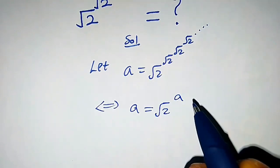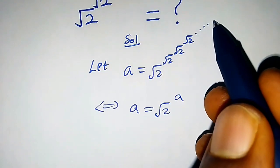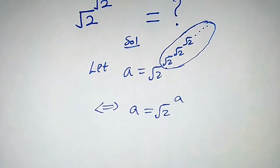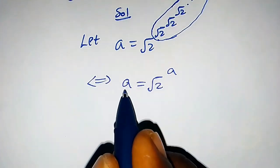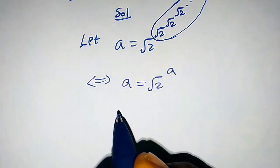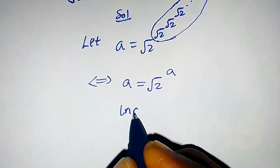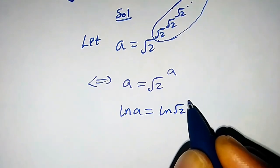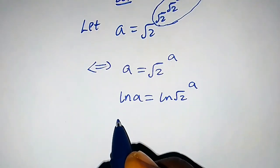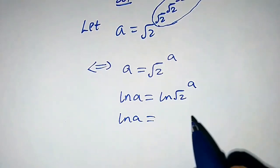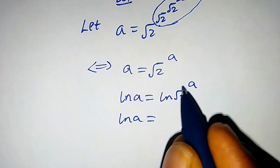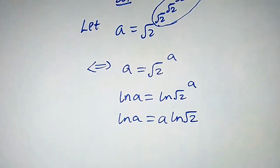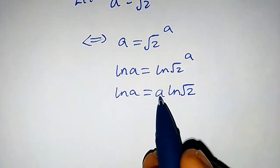So let's proceed further. Taking the natural logarithm of both sides, we get ln(a) equals ln of square root of 2 raised to power a. So ln(a) equals a times ln of square root of 2.